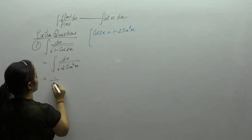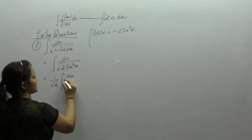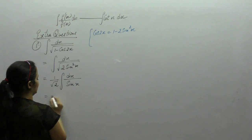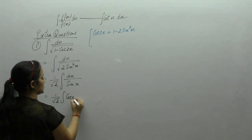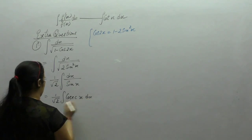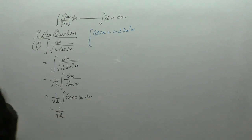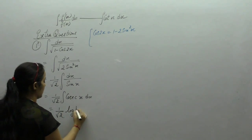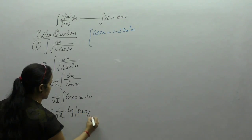1 upon square root of 2 is constant. The square and square root cancel out, leaving 1 upon sin x. Now, 1 upon sin x is equal to cosec x. The integral of cosec x is log of tan(x/2). So the answer is (1/√2) log|tan(x/2)| + c.